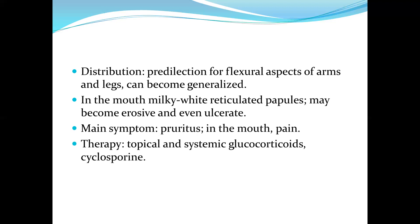The distribution of lichen planus shows a predilection for the flexural aspects of arms and legs and can become generalized. In the mouth, milky white reticulated papules may become erosive and even ulcerate. The main symptom is pruritus, which is itching; in the mouth it may also lead to pain. Therapy includes topical and systemic glucocorticoids and cyclosporine.